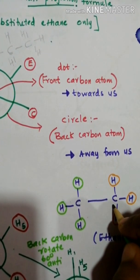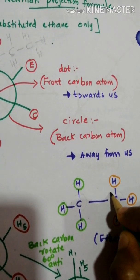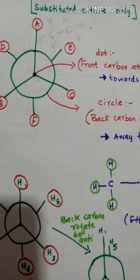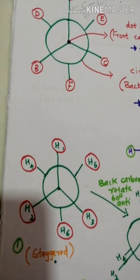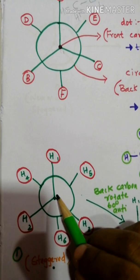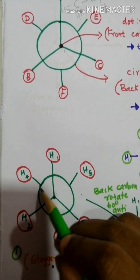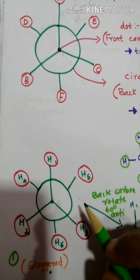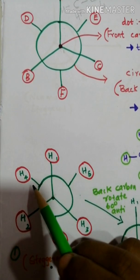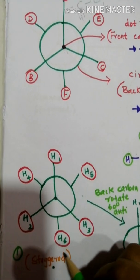In the general representation of ethane, this is the front carbon and this is the back carbon. Instead of H, we can replace it with other groups to get substituted ethane. The dot represents the front carbon and the circle represents the back carbon. When all bonds are found to be far apart, this is called the staggered position.